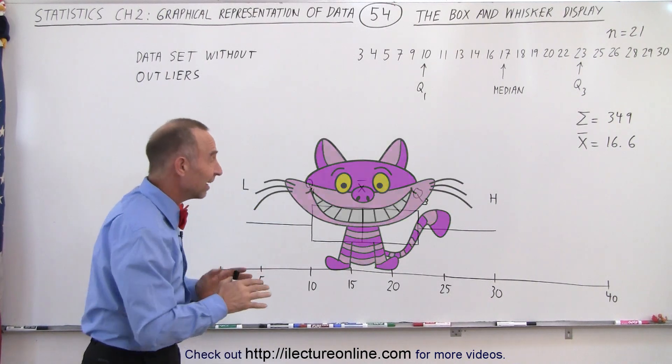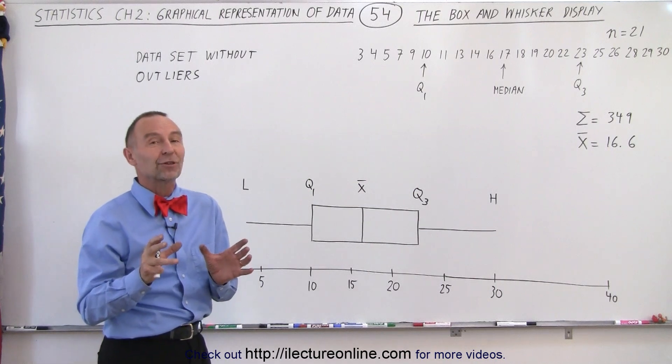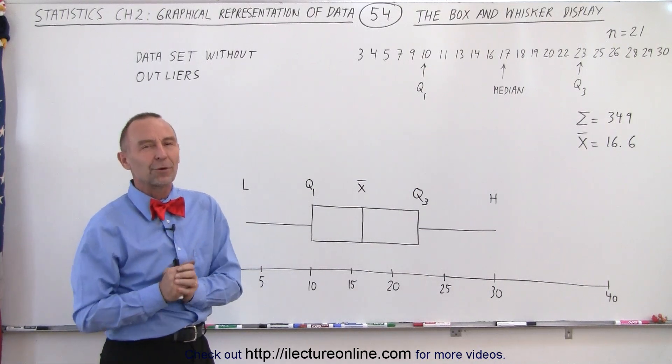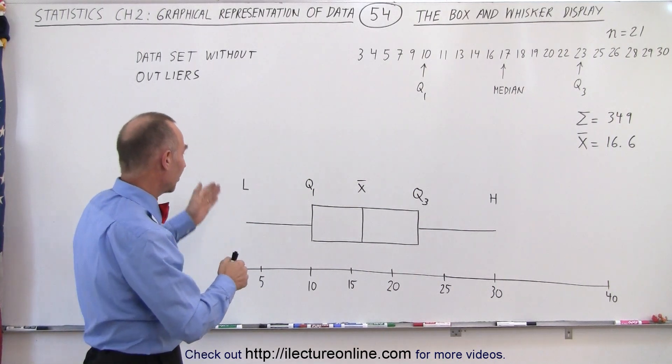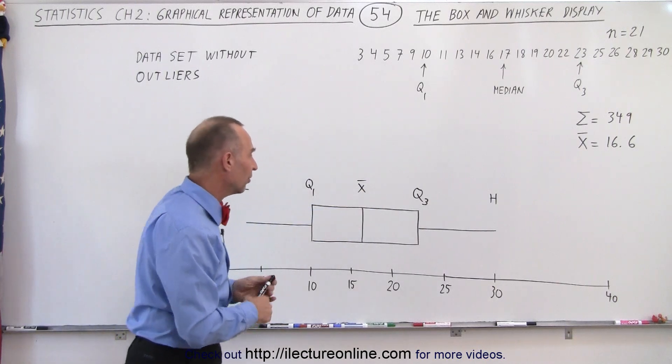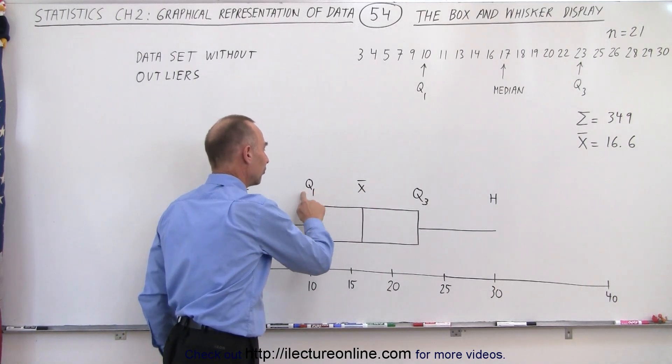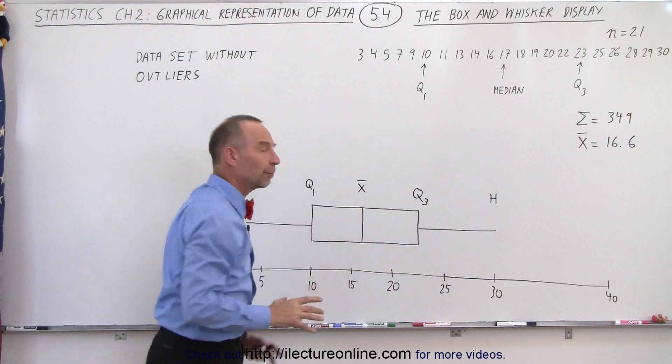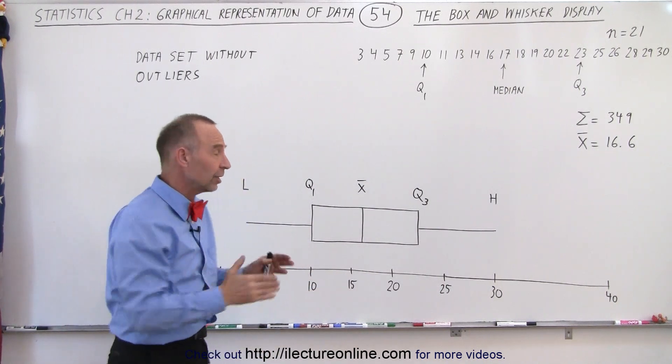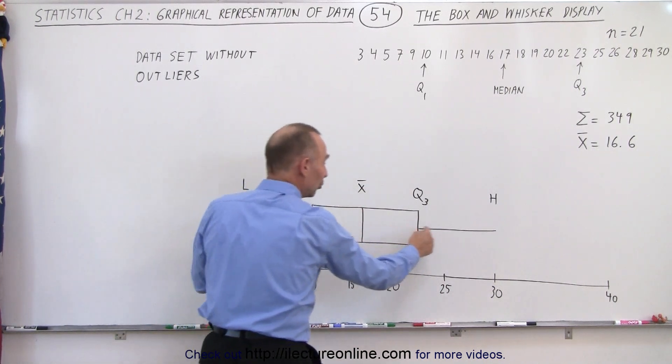But anyway, what it is, it's a visual representation of the five number summary. Again, it represents the low and the high in the data set, the average, and the first quartile and the third quartile, but it does it visually using a box and the two whiskers.